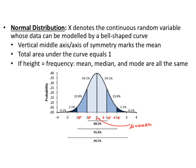A normal distribution has a bell-shaped curve. The middle, where it's symmetric about, is always the mean, called mu. It decreases the same in either direction. The total area under the whole curve is 1. The mean, median, and mode are all the same for a normal distribution. Going plus or minus one standard deviation from the mean gives 68.3% of the data; two standard deviations gives 95.4%; and three standard deviations gives 99.7% of the data.